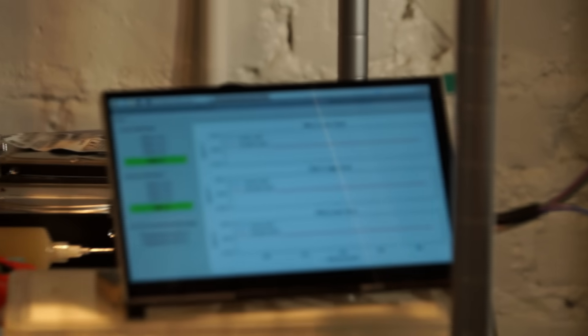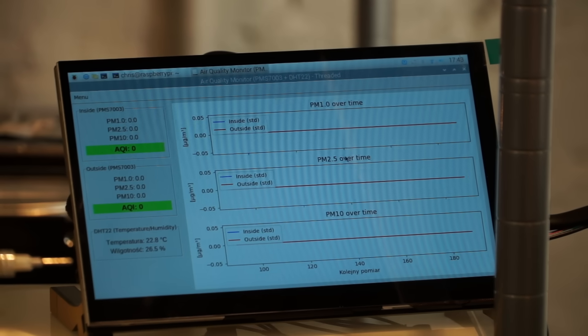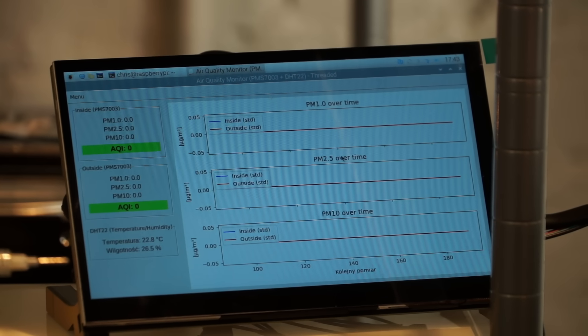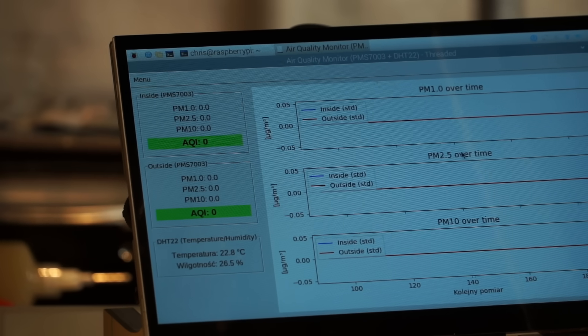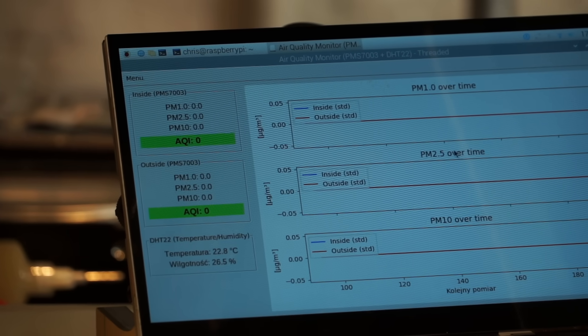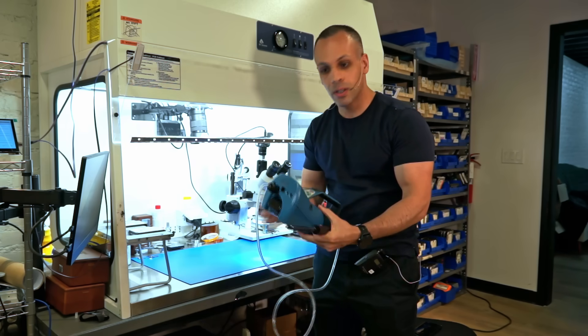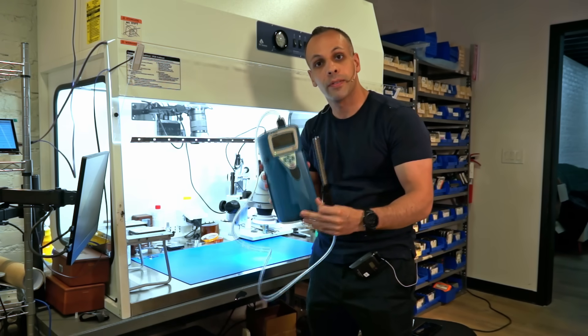On the side of the bench, we have this, which measures anything from around 1 to 10 microns in size. It's a PMS7003. But this is not really giving a great accurate representation because it doesn't get anything under 1 micron in size, which is what our new toy is for.